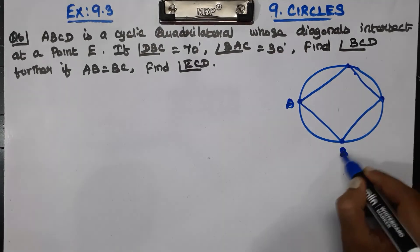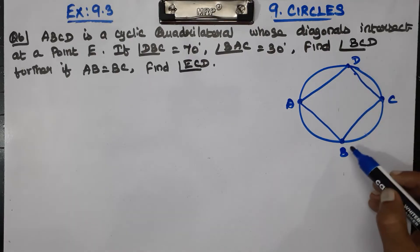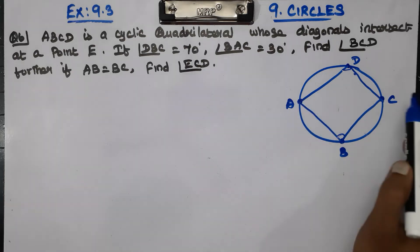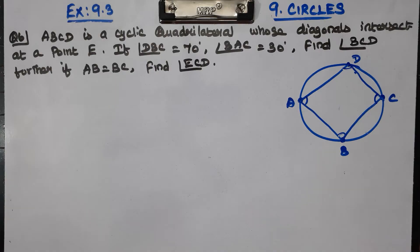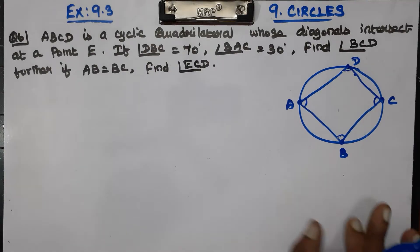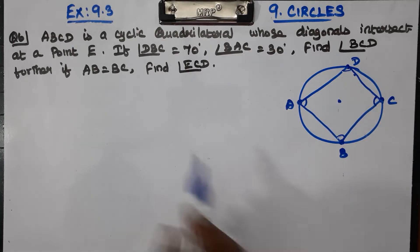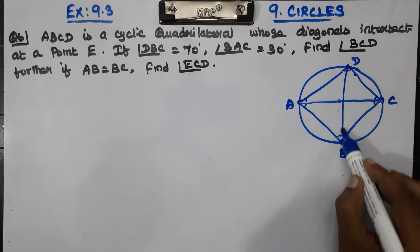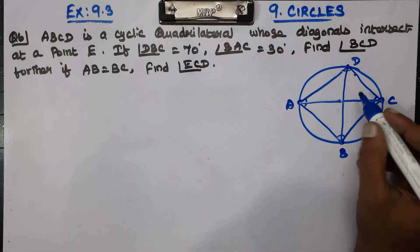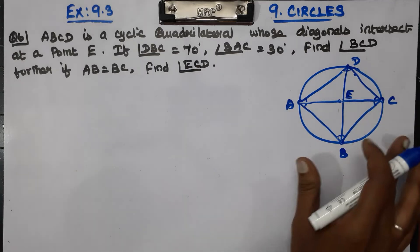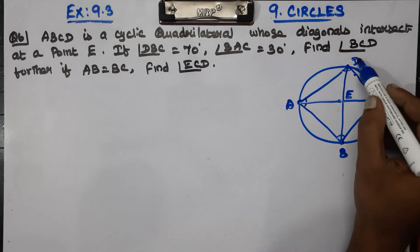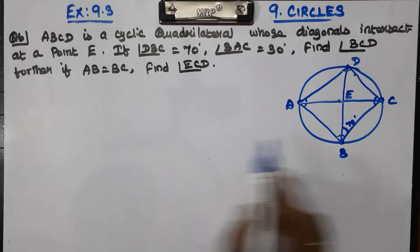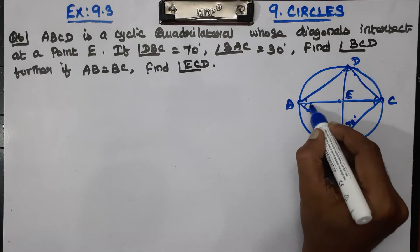In cyclic quadrilateral ABCD, we are given that angle DBC is 70 degrees and angle BAC is 30 degrees.